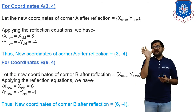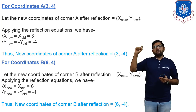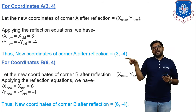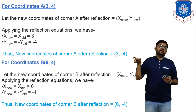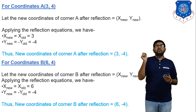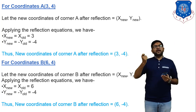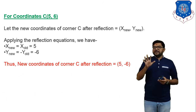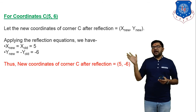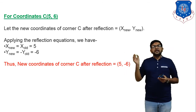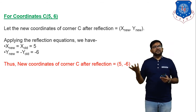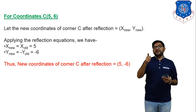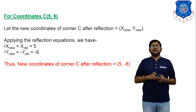Continuing the numerical: for point C with old coordinate (5, 6), applying x_new = x_old gives x_new = 5, and y_new = −y_old gives y_new = −6. So the reflected point C is (5, −6). We now have two triangles: the original triangle with vertices A(3,4), B(6,4), C(5,6) and the reflected triangle with vertices A'(3,−4), B'(6,−4), C'(5,−6).